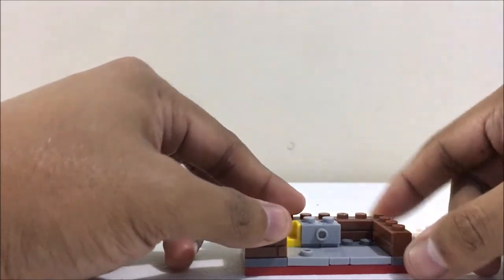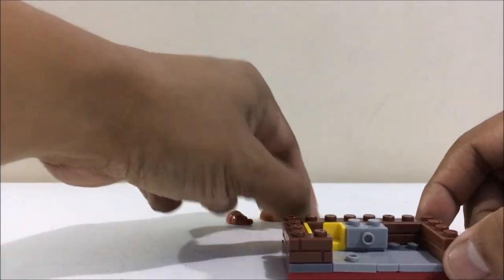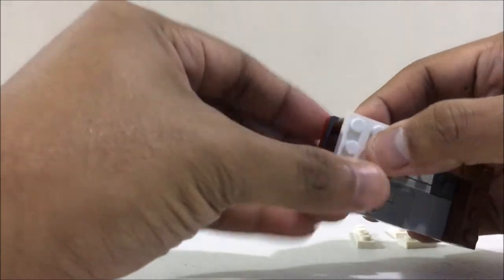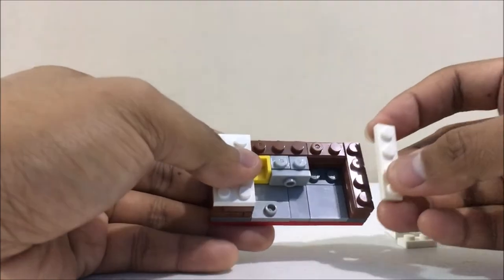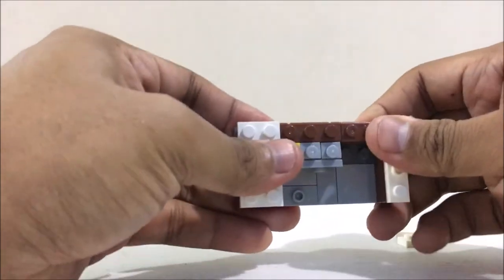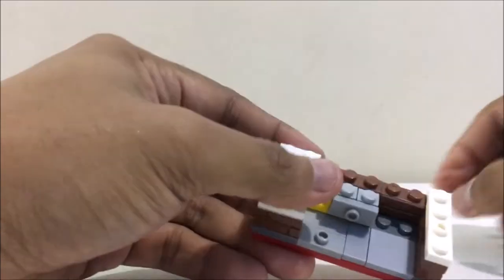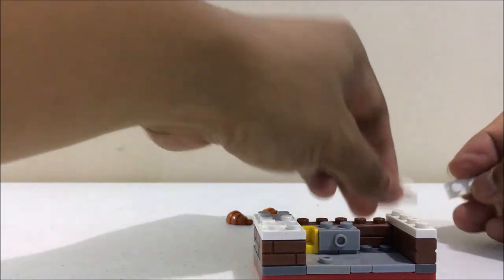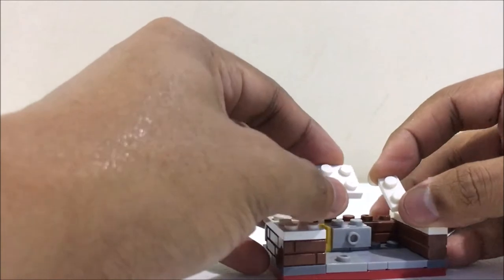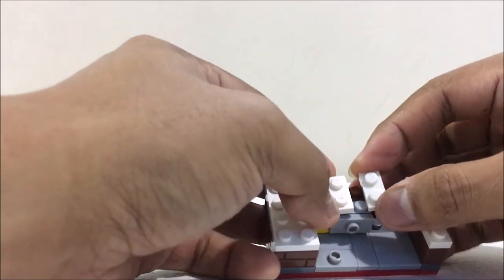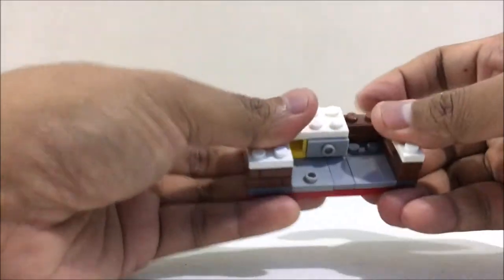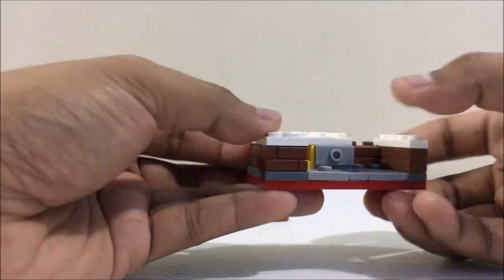Let's put the countertops. Put this one here, the 1x4 plate here. And it would be better if you have a 2x3 plate, but I don't have one, so I'll just use a 2x2 and a 1x2 plate. So there you have it, the base is finished.